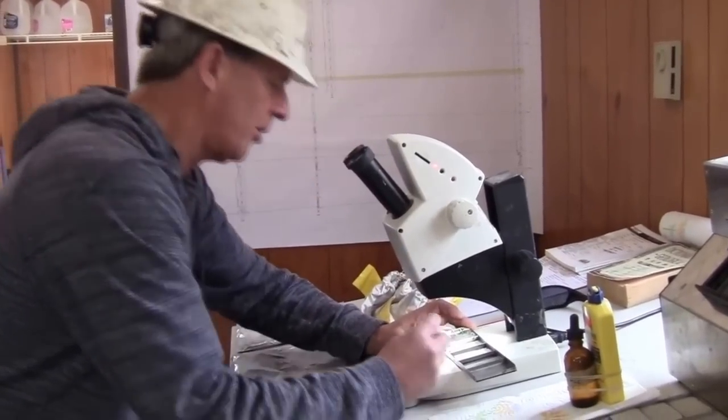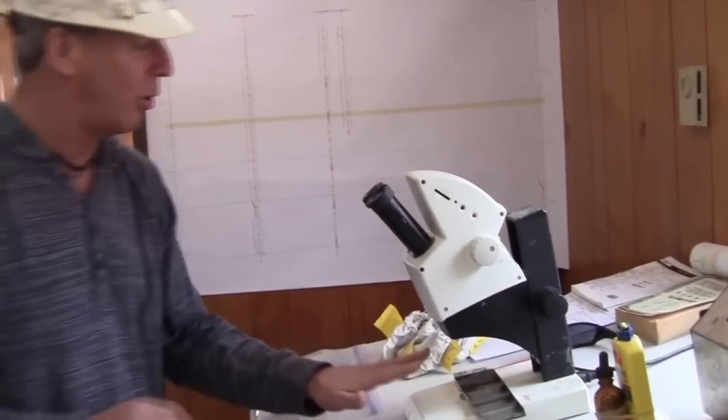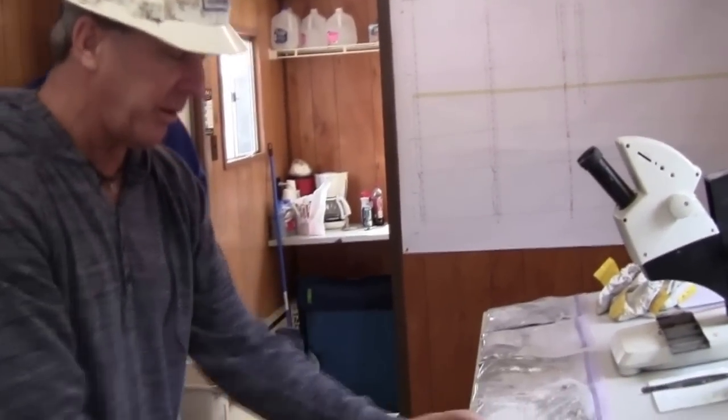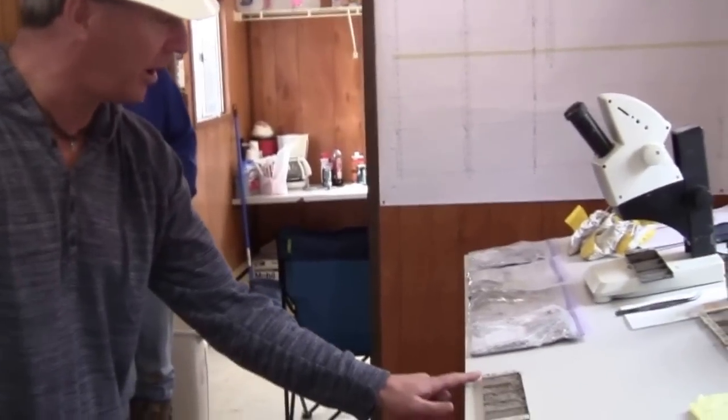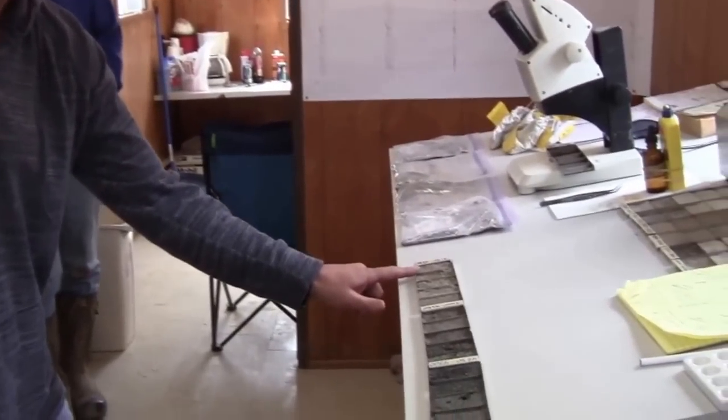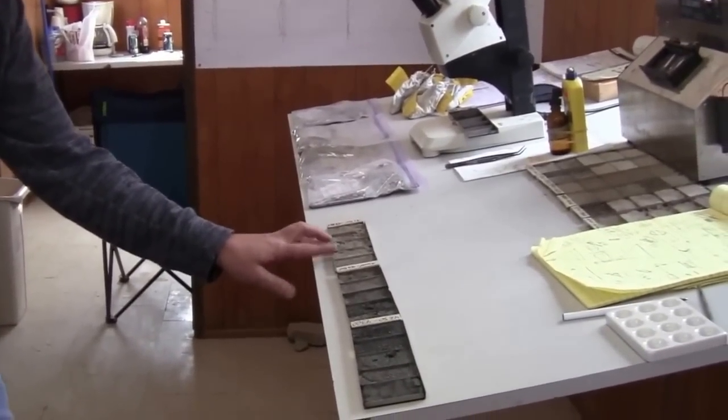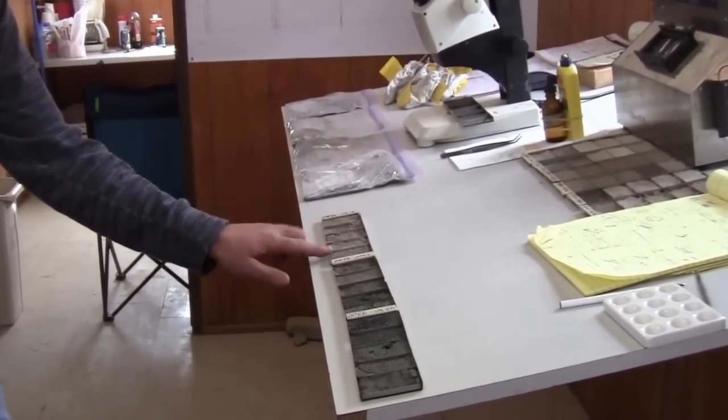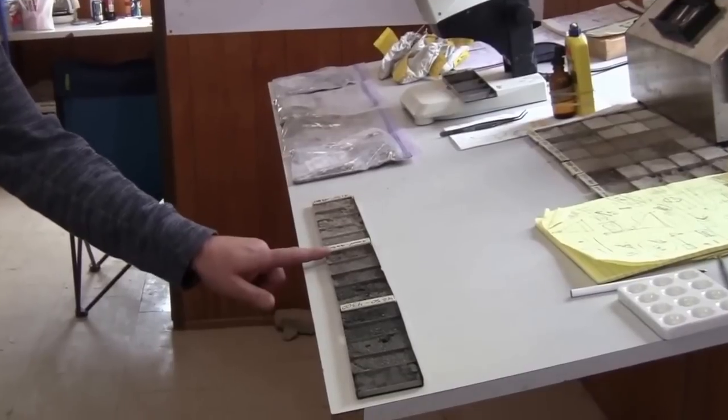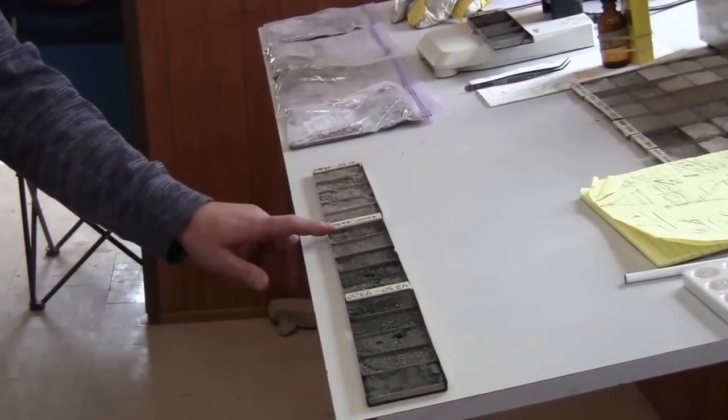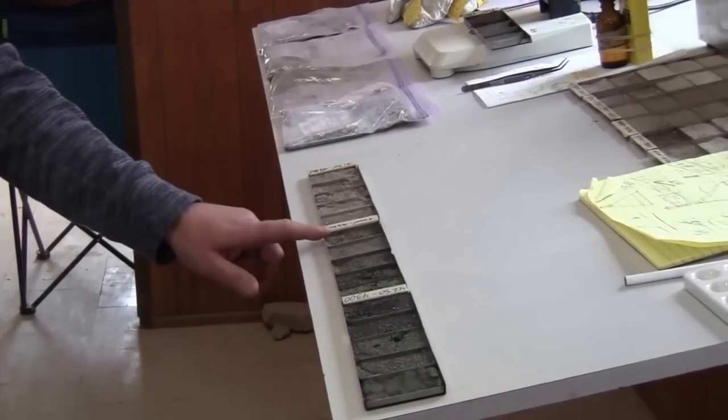And this is currently, we're currently running a core barrel in to core this section right now. Now, you can see where the shale came in at. If you look here, we were drilling in a lighter, cleaner dolomite section called the Maynardsville Dolomite. And then right here is where, about 4,200 feet, actually 4,199, we hit what we call the Nolichucky shale.